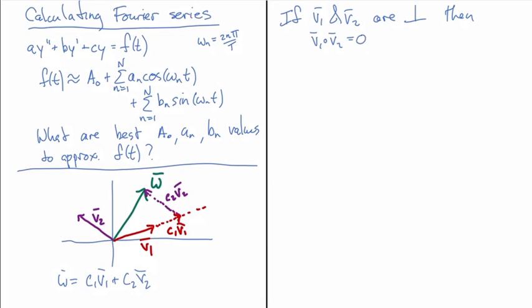And what we want is we want a c1 and c2 that works. So we're going to say w dotted with v1 is going to be c1 v1 plus c2 v2 dotted with v1. And then because of that orthogonality, we have c1 v1 dotted with v1 plus c2 v2 dotted with v1. But the second one ends up being zero because we were perpendicular.